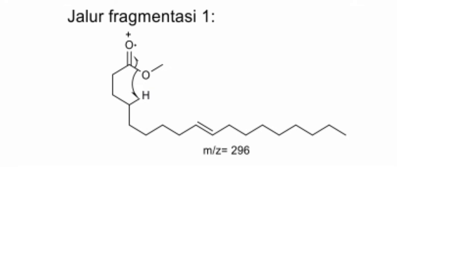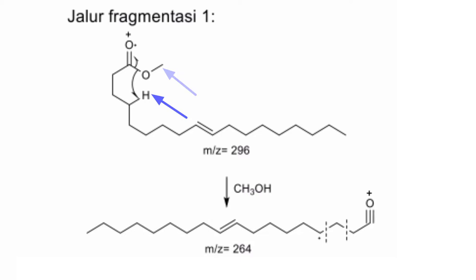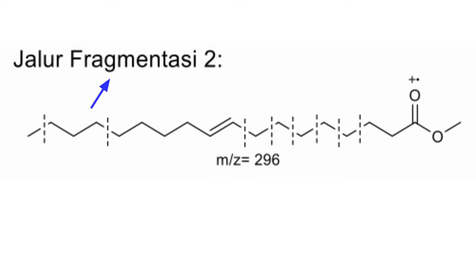Metil ester oleat ada jalur fragmentasi 1, di mana hidrogen gamma-nya bergabung dengan O-methyl di sebelah karbonil. Karena 1 elektron didapatkan dari C karbonil membentuk ion asilium, sehingga terbaca di spektrum masa sebesar 264 m/z. Lalu ion asiliumnya terjadi pemutusan alkil yang pertama di sini, yang terbaca di spektrum masa sebesar 222 m/z. Lalu terjadi pemutusan lagi di metilnya, sehingga terbaca di spektrum masa sebesar 208 m/z.